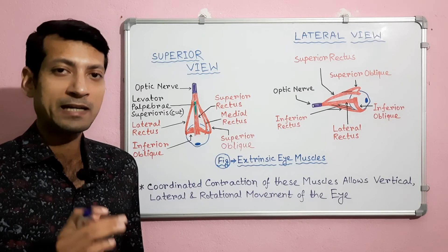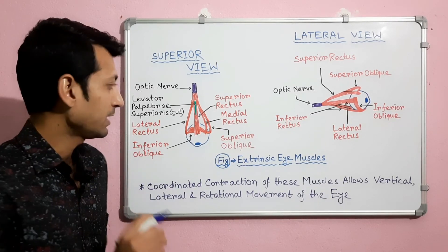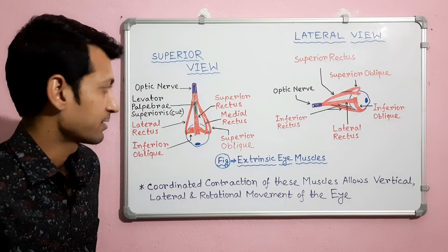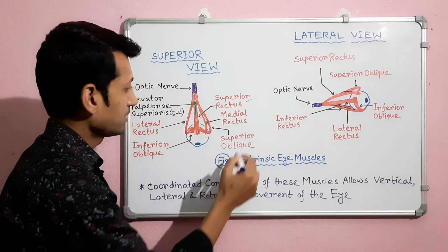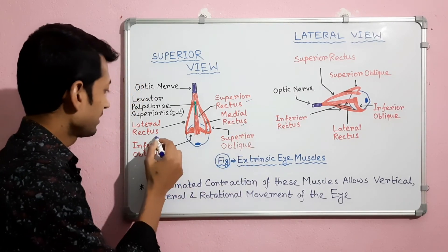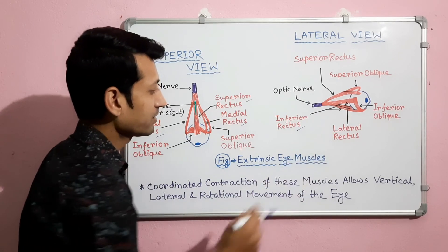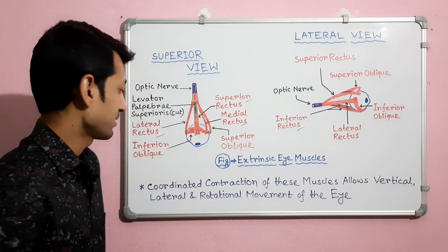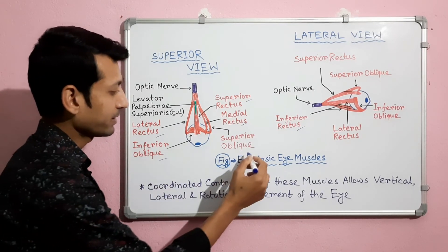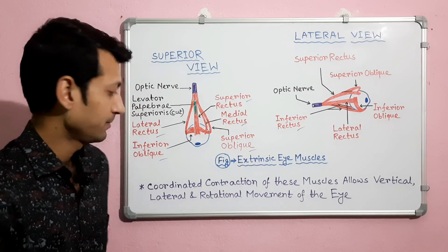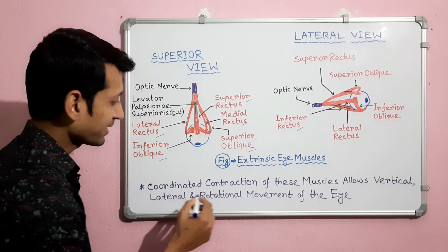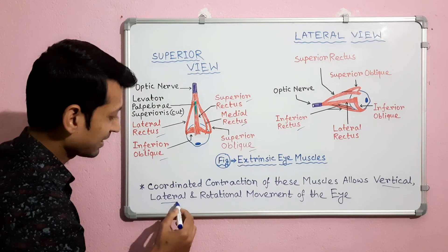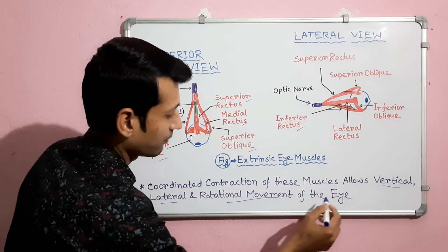There are a few extrinsic eye muscles attached to the outside of the eyeball. There are four rectus muscles: superior rectus, medial rectus, lateral rectus, and inferior rectus. There are also two oblique muscles: inferior oblique and superior oblique. Coordinated contraction of these muscles allows vertical, lateral, and rotational movement of the eye.